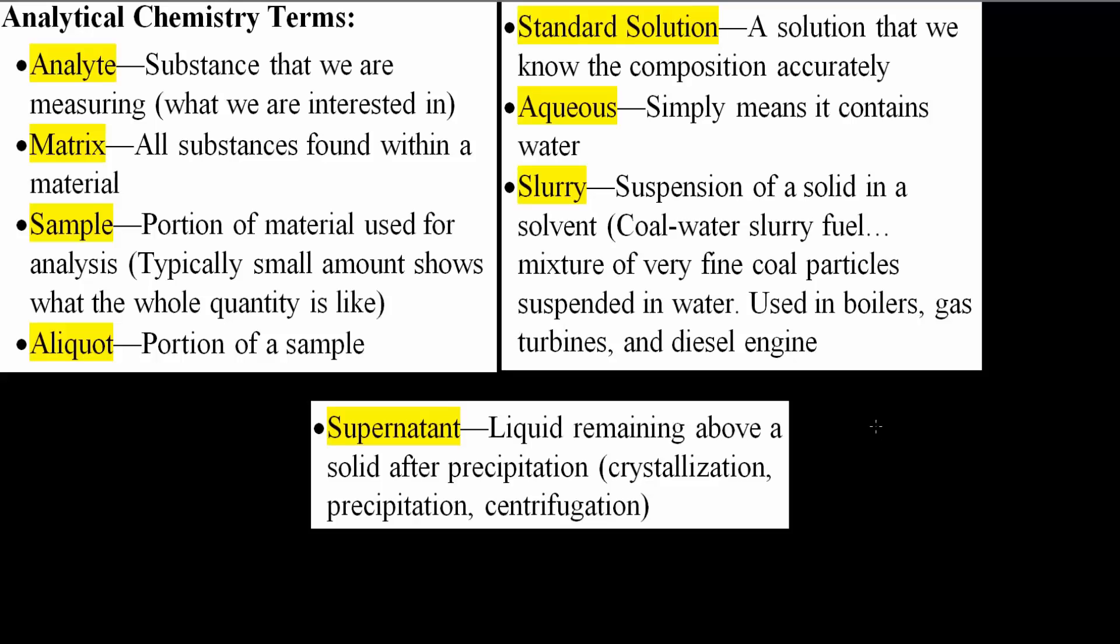In this reference video, we will go over a few analytical chemistry terms. Analyte is a substance that we are measuring, what we are interested in. So if we're measuring seawater and we want to know the percentage of sodium, the analyte could be sodium.